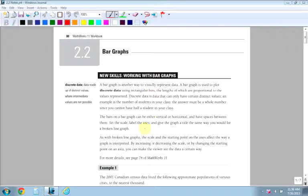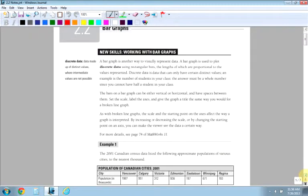They use rectangular bars. Discrete data is data that can only have certain distinct numbers, like certain distinct values. Like the number of students in your class or something like that, the number of hairs on your head, the number of babies in a baby ward. Let's look at an example here.